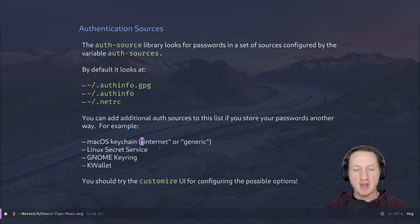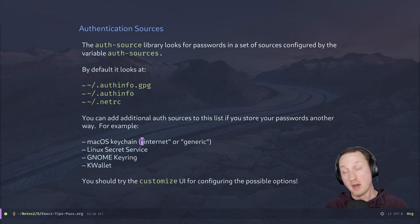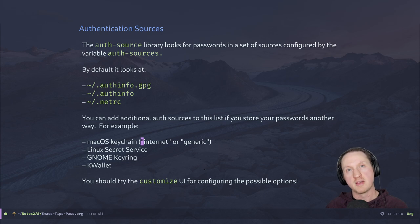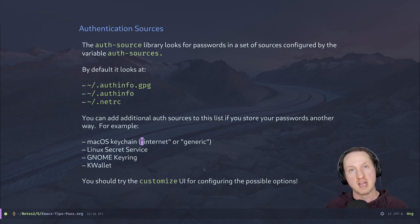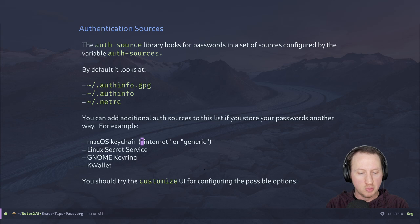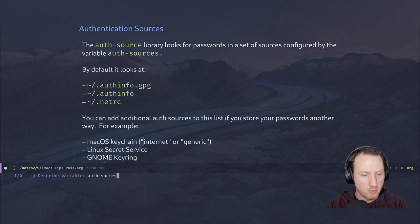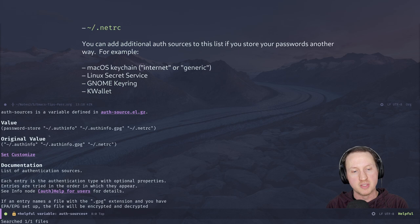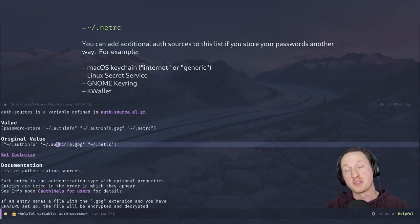If you want to try any of these other backends after watching this video, I highly recommend using the customize UI — we haven't talked about that in depth yet, but it's the recommended way to customize the auth-sources variable because it's complicated. The documentation actually says you should use the customize UI. You can also set auth-sources to be whatever file you want, so long as it conforms to the auth-info file format.